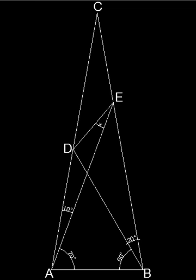Hi fellas, perhaps you've heard about the so-called world's hardest easy geometry problem that's been going around for a while. Here it is. Given the isosceles triangle ABC such that angle A equals angle B equals 80 degrees, point D belongs to segment AC such that angle DBA is 60 degrees, and point E belongs to segment BC such that angle EAB is 70 degrees. Letting angle DEA be X, the task is to compute the value of X using only elementary geometry.